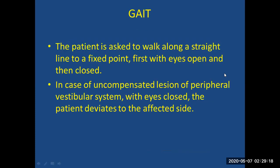The patient is also asked to walk along a straight line to a fixed point with eyes open and then eyes closed. In cases of uncompensated peripheral vestibular lesion, with eyes closed the patient deviates to the affected side. For example, if the patient has a right-sided pathology, they deviate to the right.